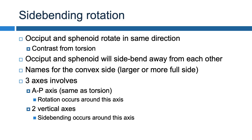The next physiologic motion of the cranium we'll talk about is sidebending rotation. This happens when the occipital and the sphenoid rotate in the same direction but sidebend away from each other. These will be named for the convex side, or the side that has more fullness on palpation — the larger side. Sidebending rotation occurs around three total axes: an AP axis, the same as seen in torsion, and two vertical axes.